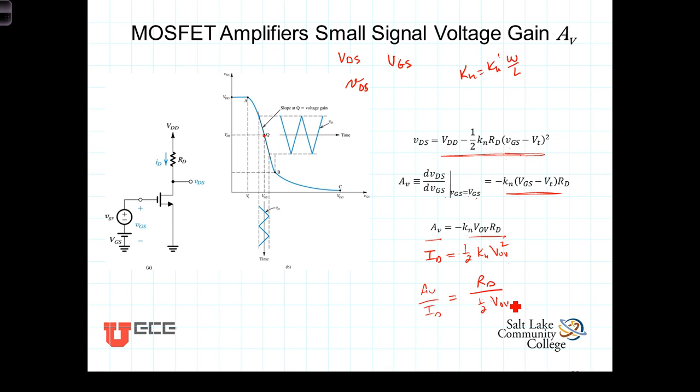So what we're doing is the K_n's cancel. Actually, we've got a minus sign in here. The K_n's cancel. This V_OV cancels one of the V_OVs there, and we're left with a negative R_D in the numerator and a one-half V_OV in the denominator.